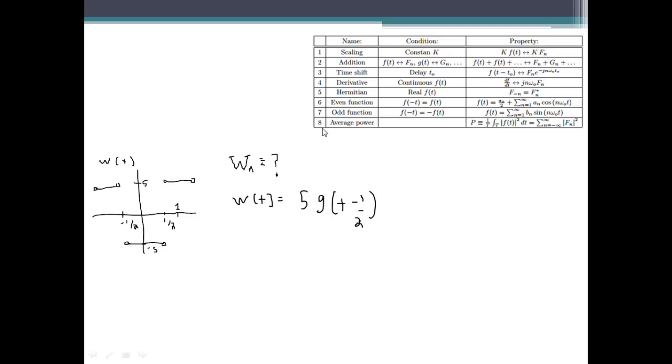Alright so now we're going to use property 1 from our table which is the scaling property, and it states that if we multiply our function by a constant it just gets pulled through to the coefficients. We're also going to use property number 3 which is the time shift property, and that says if we shift the function by t0 we have to multiply the coefficients by e to the minus jn omega0 t0.